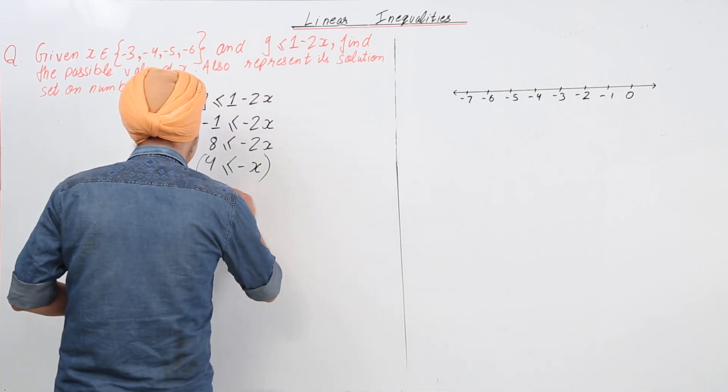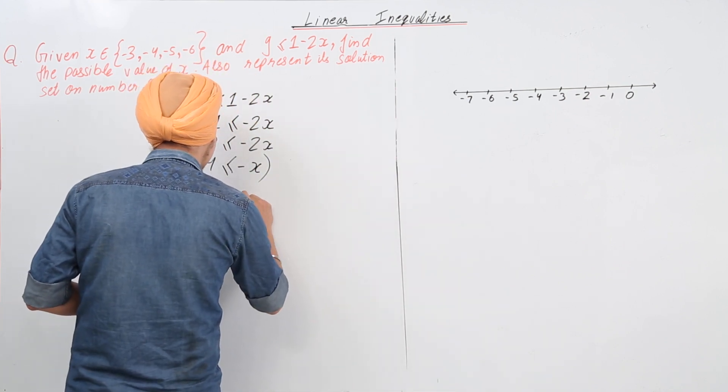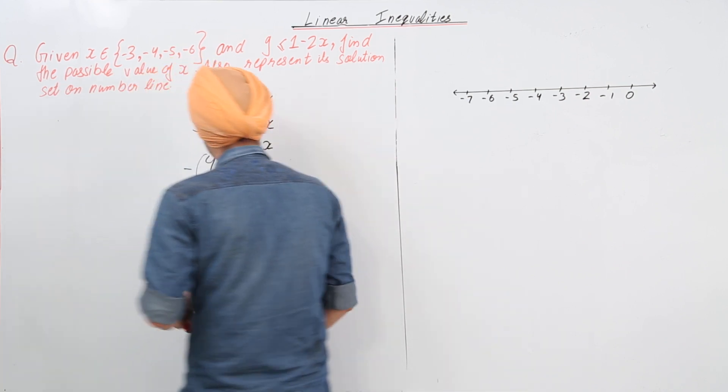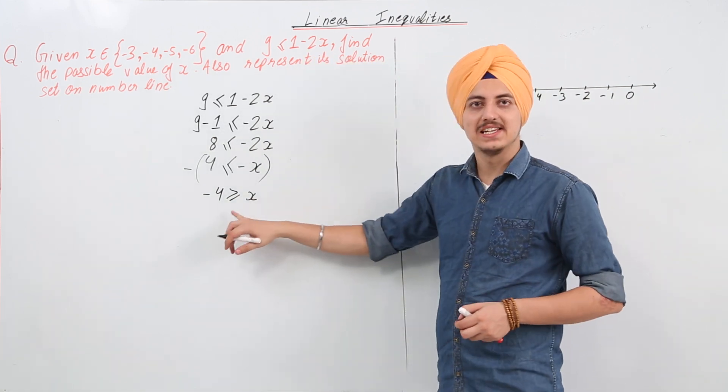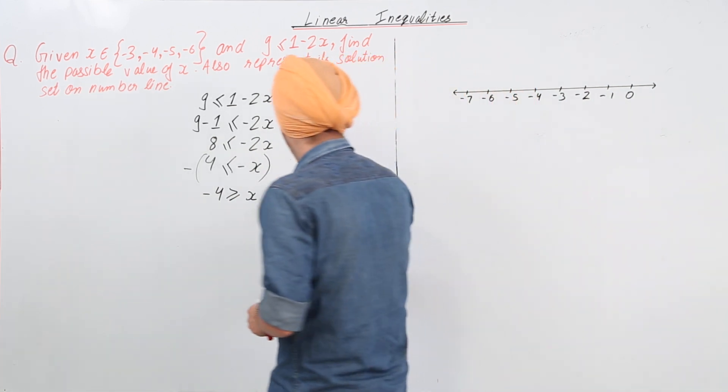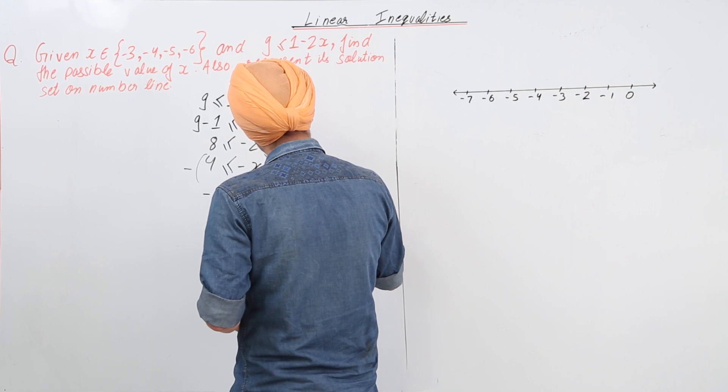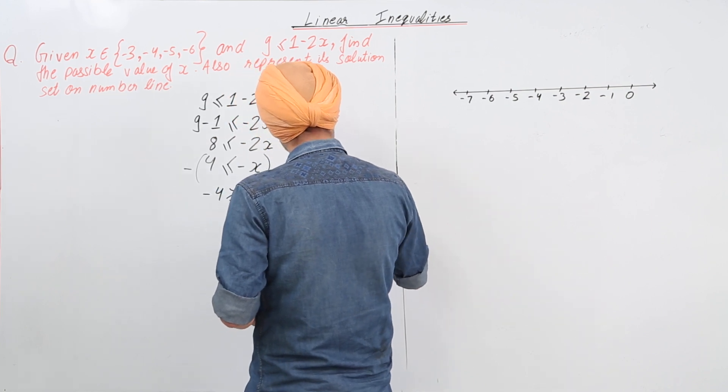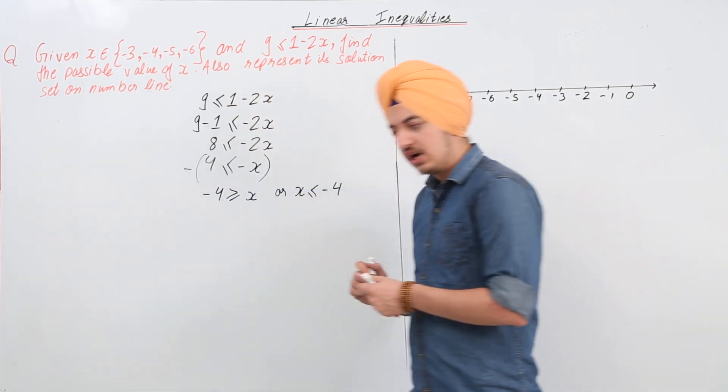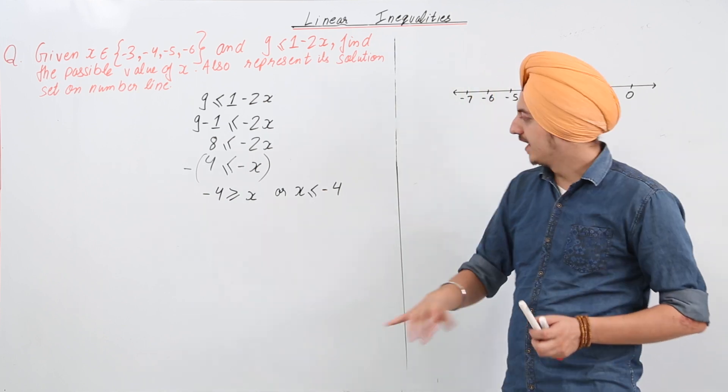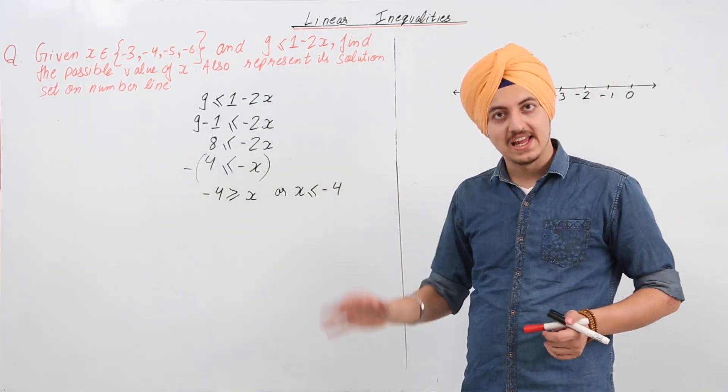So it will become minus 4 is greater than or equal to x, or x is less than or equal to minus 4. So x can have a value minus 4 or less than it.